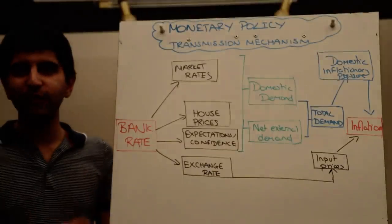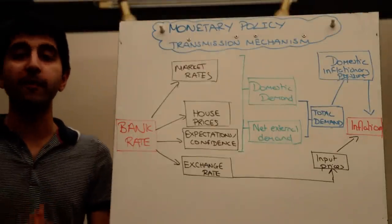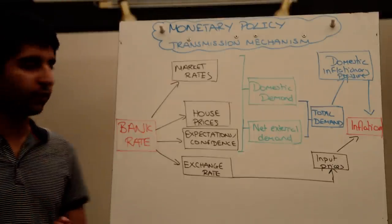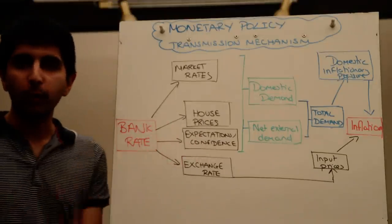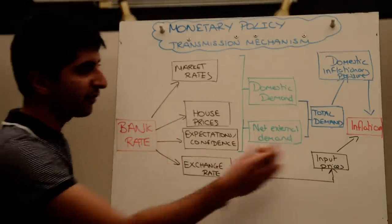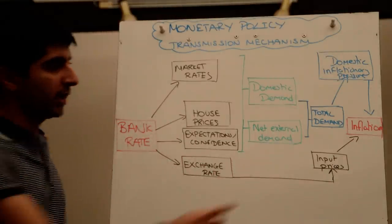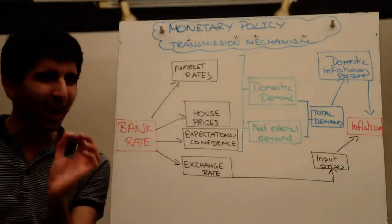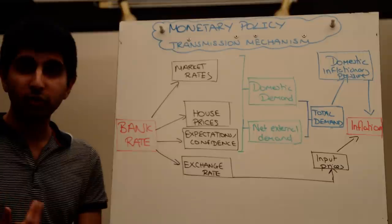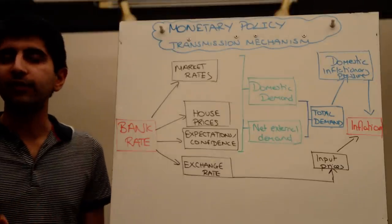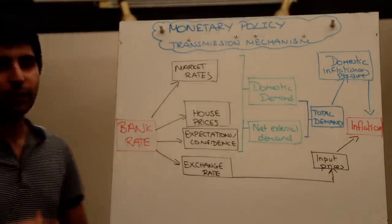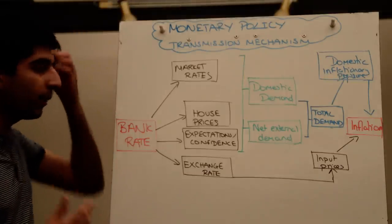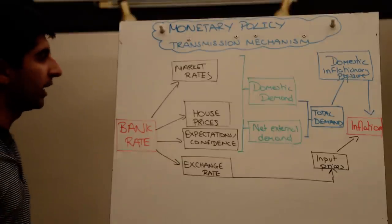Hi everyone. Let's now consider in this video the transmission mechanism of monetary policy. When a central bank decides to change interest rates, there are lots of different channels by which that change can work through before we have a final effect on the real economy and a final effect on inflation. It's important in an exam situation, if you're talking about time lags and how monetary policy can take a while to feed through into the real economy, you need to explain why with some reference to the transmission mechanism. Let's understand how interest rates actually feed through the real economy.